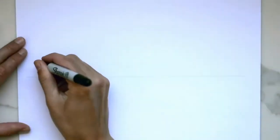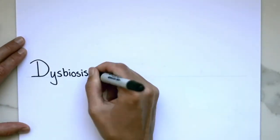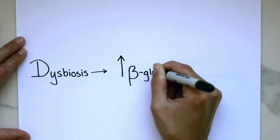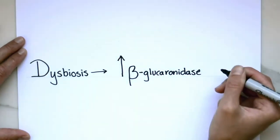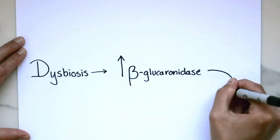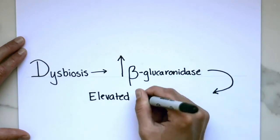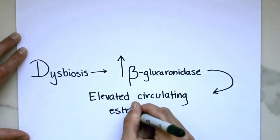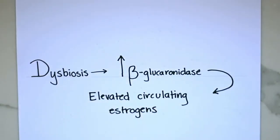If there is an imbalance in the gut bacteria, which we refer to as dysbiosis, there can be an abundance of the beta-glucuronidase-producing bacteria, which leads to elevated levels of circulating estrogens. This may upregulate estrogen-driven diseases such as endometriosis and certain estrogen-dependent cancers such as endometrial cancer and breast cancer.